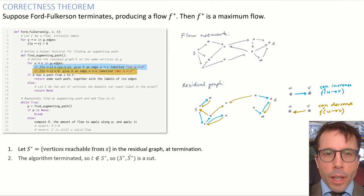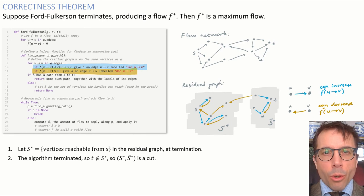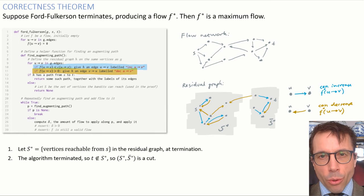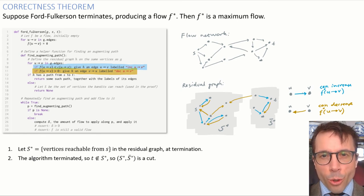Now, let's think about what the algorithm has done in its final pass. It built the residual graph, and it tried to find a path from the source to the sink, but it couldn't. Let's define S star to be the set of vertices that the breadth-first search was able to reach. In other words, the set of vertices that are reachable from the source in the residual graph. This gives us a cut. Remember the definition of a cut? To be a valid cut, the source has to be on one side and the sink has to be on the other. Well, in this case, the breadth-first search couldn't reach the sink, so we've definitely got ourselves a cut.